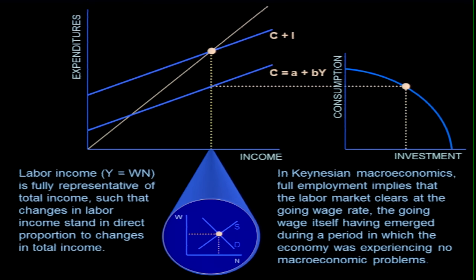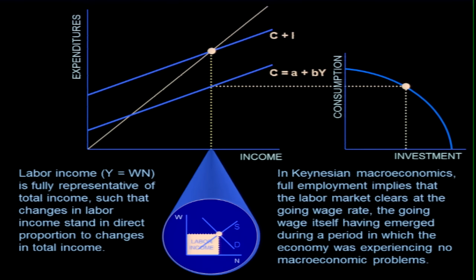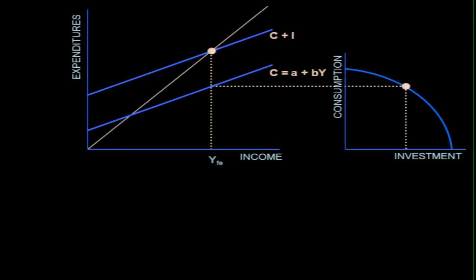The going wage itself having emerged during a period in which the economy was experiencing no macroeconomic problems. But as soon as it experiences macroeconomic problems, we're in trouble because it doesn't change, or at least it doesn't fall. Labor income, Y equals W times N. At least in this country we use N stands for labor. It's just the price times quantity of labor. Labor income is fully representative of total income, such that changes in labor income stands in direct proportion to changes in total income. That's strange because the other factors, capital and land, they all either move up and down together, but there's never any movement of one against the other. But that's it. And so labor income would be that rectangle there where you just multiply the wage rate times the number of work hours and scale it up by whatever proportion of total inputs are something other than labor.